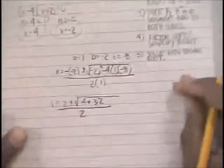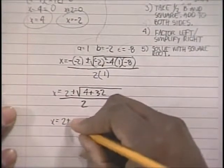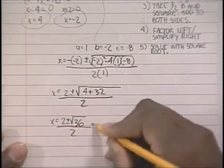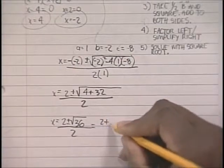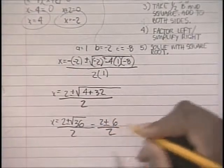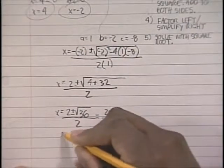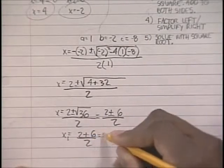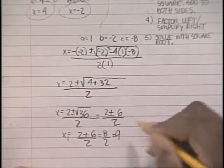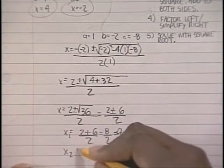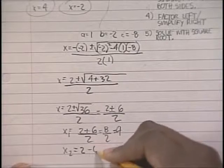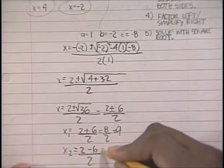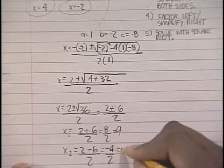So now let's keep going. We have x equals 2 plus or minus the square root of 36, all over 2. The square root of 36 is 6. So 2 plus or minus 6 over 2. You end up with one answer being 2 plus 6 over 2, which is 8 over 2, which is 4. And the second answer is 2 minus 6 over 2, which is negative 4 over 2, which is negative 2.